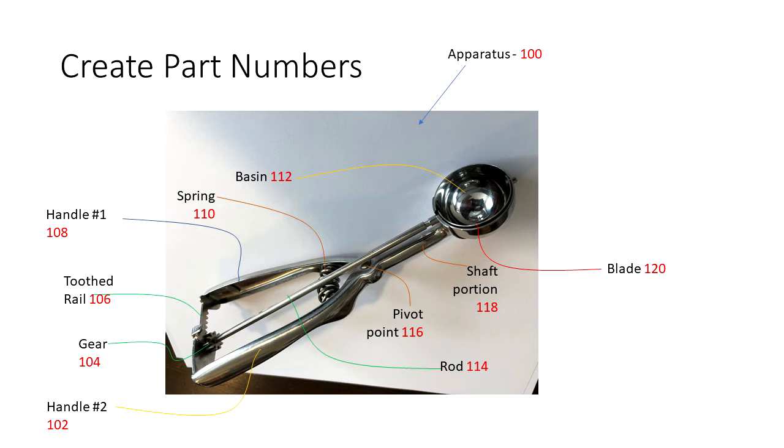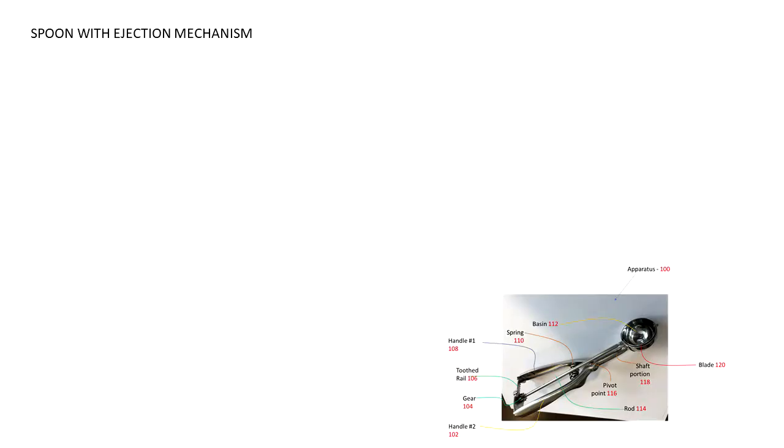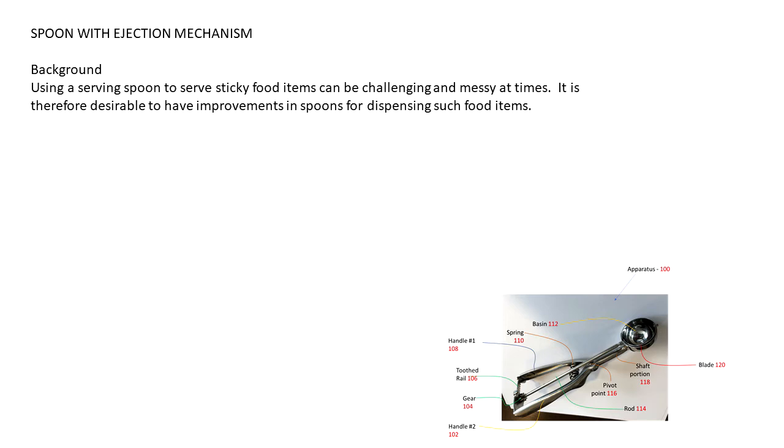So now let's start writing the quick provisional application. We will start with a title: spoon with ejection mechanism to describe our spoon that can eject the food contents. Then a sentence or two for the background. And with the background I want to take care not to talk about the invention itself in this part. We don't need to say too much here, just a sentence or two will suffice. I have another video that discusses the background section in more detail and I will put a link to that video in the description.